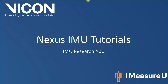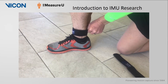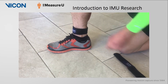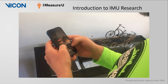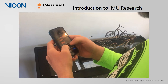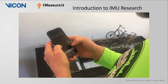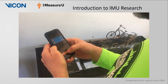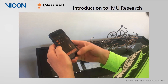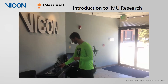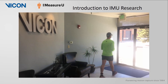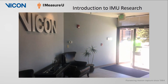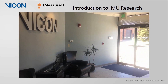Welcome to the Nexus IMU Tutorials. This session is on the IMU Research app. IMU Research is a free to use app that can be downloaded and installed on any iOS device. This app allows a user to collect data directly to the iOS device or save data directly to the onboard sensor memory. The app is intuitive, easy to use, and convenient as captures can be initiated on the go within minutes from a user's mobile phone. This means that collecting data in vivo has never been easier and more accessible.